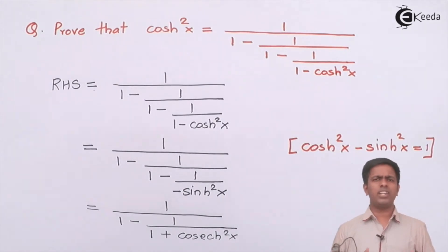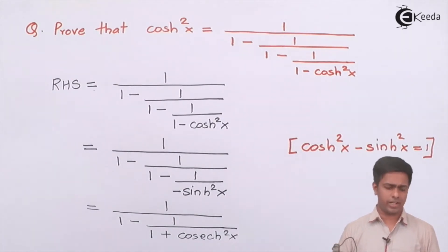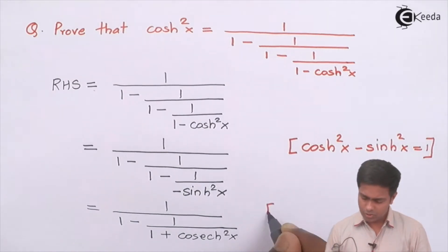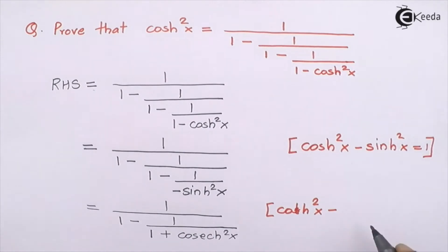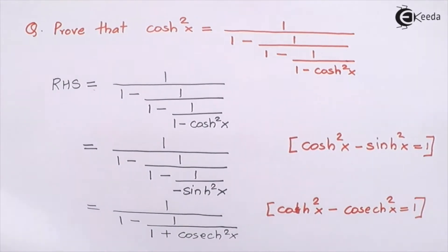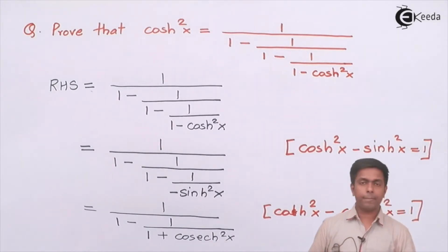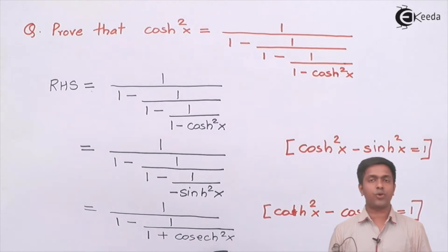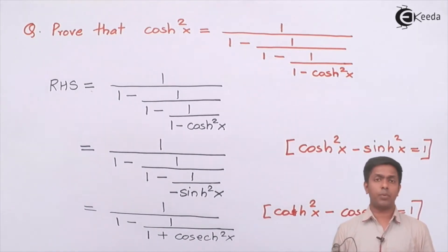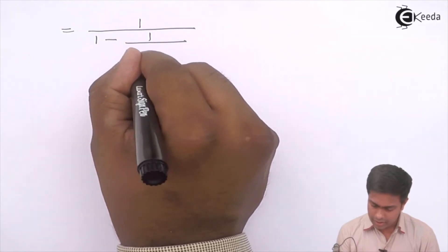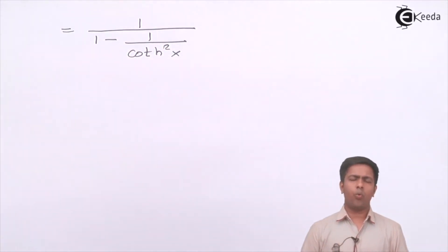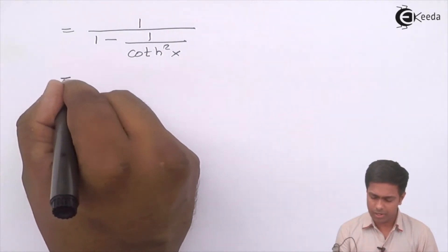Now, what is the formula involving 1 plus hyperbolic cosec square x? The relevant identity is: hyperbolic cot square x minus hyperbolic cosec square x equals 1. Rearranging, we get the value of 1 plus hyperbolic cosec square x as hyperbolic cot square x. Substituting, the expression becomes 1 upon 1 minus 1 upon hyperbolic cot square x. And since 1 upon cot is tan, this simplifies to 1 upon 1 minus hyperbolic tan square x.